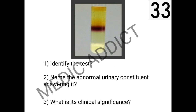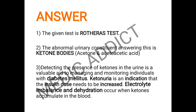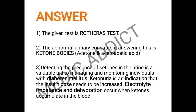Based on the test tube, we have to name the abnormal urinary constituent and give the clinical significance. The given test is Rothera's test, which is a test for abnormal ketone bodies present in urine. The abnormal ketone bodies are mainly acetone and acetoacetic acid — primary and secondary ketone bodies. In diabetes mellitus, a significant complication is diabetic ketoacidosis, where ketone bodies accumulate in the body. This test is used for monitoring patients with diabetes mellitus. Ketonuria indicates that the insulin dose needs to be increased; electrolyte imbalance and dehydration occur when ketone bodies accumulate in the blood.